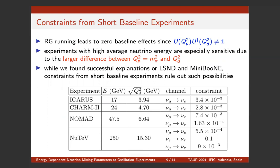We found the most relevant short-baseline experiments for our consideration to be Icarus, CHARM2, NOMAD, and NuTeV — particularly the latter two because they operate at much higher energies. The larger the energy, the larger the momentum transfer at detection, meaning the RG effects are essentially larger. The next slide will show how strongly constraints from short-baseline experiments reduce the parameter space I showed for T2K and NOvA.